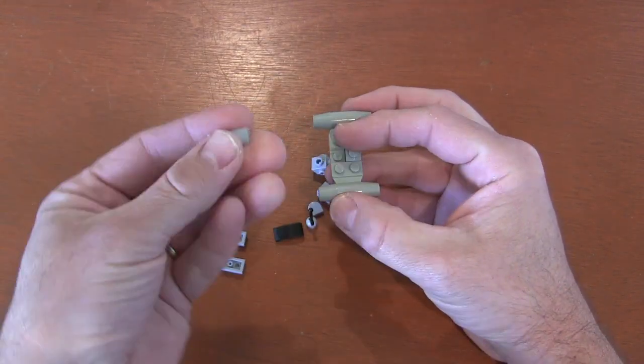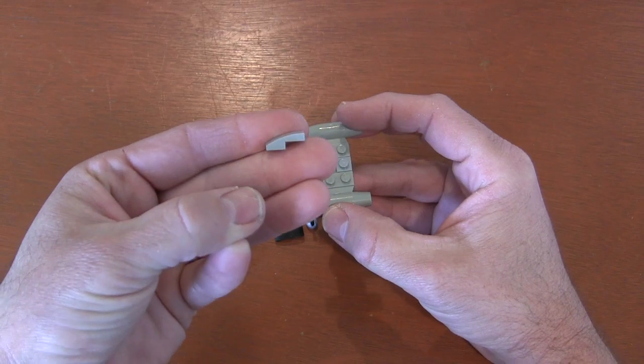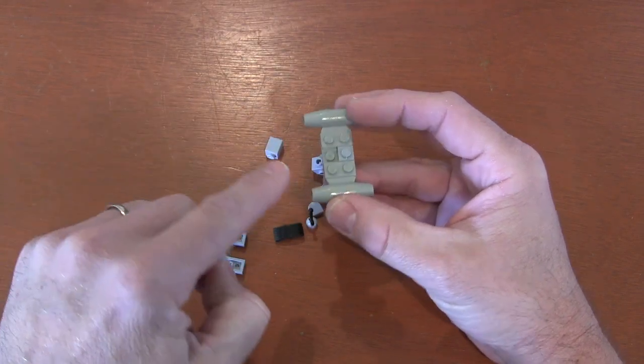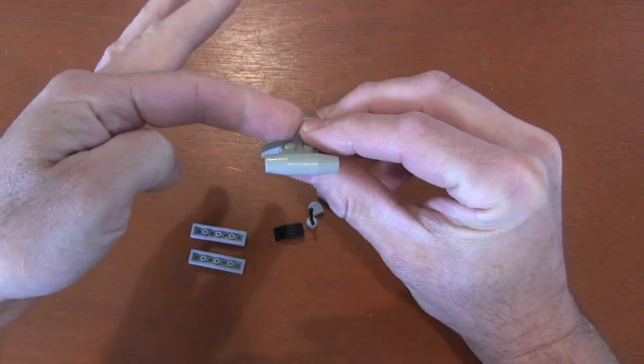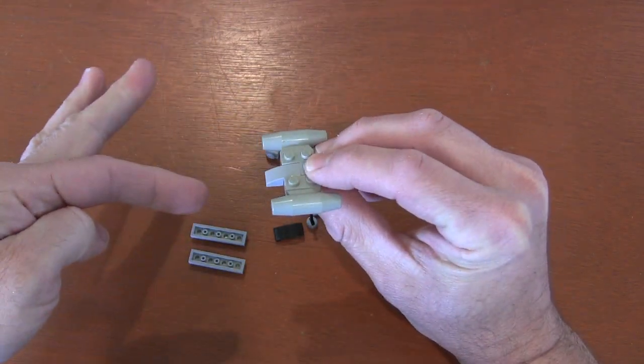And now this front stud here, I got a 2x1 curved slope with no studs. And I'm going to put it so that it goes in that front stud, that raised part goes in that front stud like this. And this is going to give that sloping down of the Razor Crest.